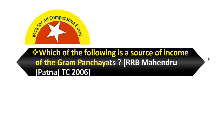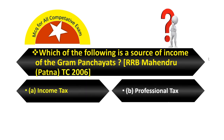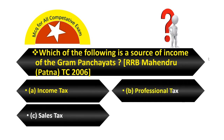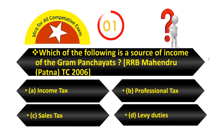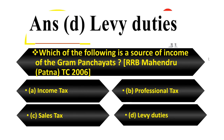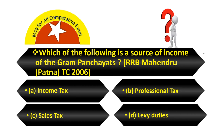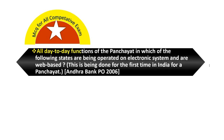Which of the following is the source of income of the Gram Panchayat? Option A, Income Tax. Option B, Professional Tax. Option C, Sales Tax. Option D, Levy Duties. Your answer is Levy Duties.